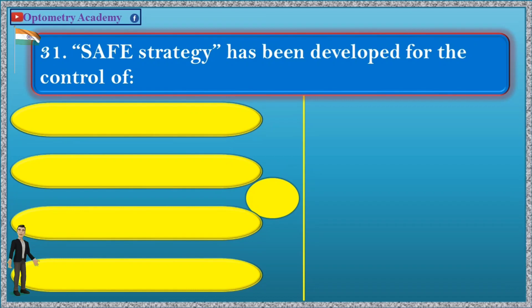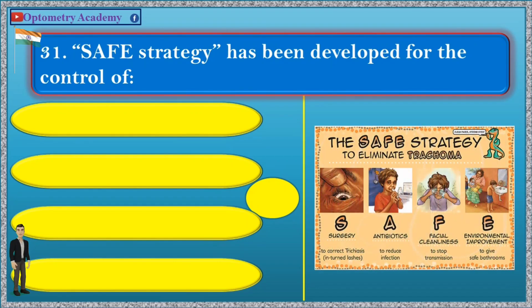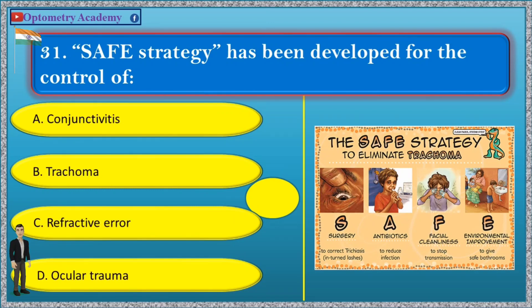Question 31. SAFE strategy has been developed for the control of: A. Conjunctivitis, B. Trachoma, C. Refractive error, D. Ocular trauma.